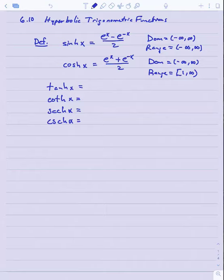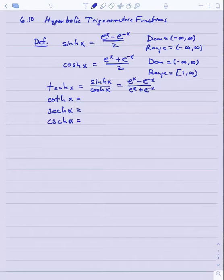These will all be reciprocals of other functions. In the case of tangent, we define hyperbolic tangent to be hyperbolic sine divided by hyperbolic cosine. Notice that based on our earlier definitions, that would be e to the x minus e to the minus x divided by e to the x plus e to the minus x. We'll define hyperbolic cotangent to be the reciprocal of hyperbolic tangent. Similarly, hyperbolic secant will be the reciprocal of hyperbolic cosine, and hyperbolic cosecant will be the reciprocal of hyperbolic sine.